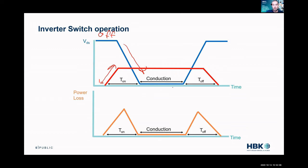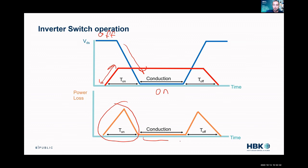In this rise time and fall time, we have a brief period where the high voltage and high current overlap, and we get a spike of power — that's the switching loss. When the switch is in the on state, which is the conduction area, we have current flowing through the switch but our voltage is near zero, and we have a little conduction loss because there is still a small voltage drop.